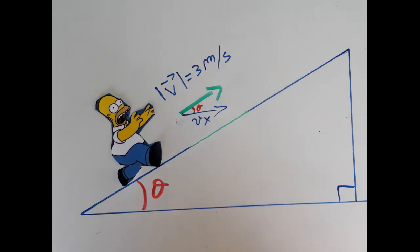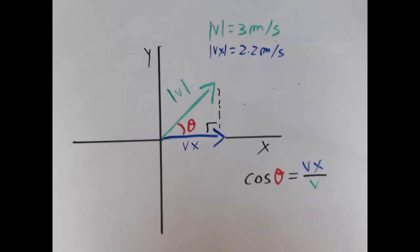The angle in between the magnitude and the x component is the same angle in between the ground and the surface of the hill. I placed both vectors in a canonical way on a Cartesian plane. The green arrow is the magnitude and the blue arrow is the x component of the velocity.